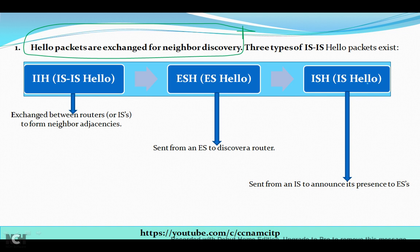IIH, or IS-IS Hello, is exchanged between routers or Intermediate Systems to form neighbor adjacency. The main function of IIH is to exchange information to form adjacencies. ESH, or End System Hello, is sent from an End System to discover routers on the network.